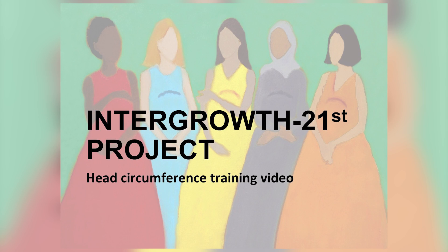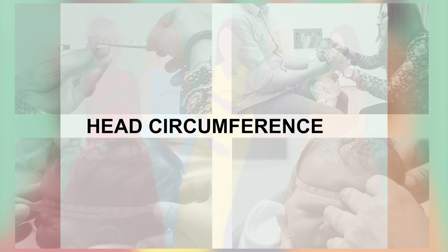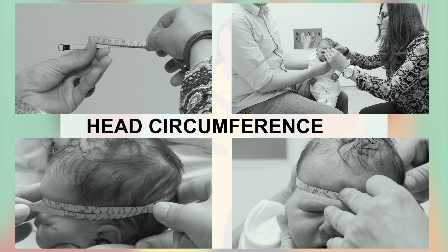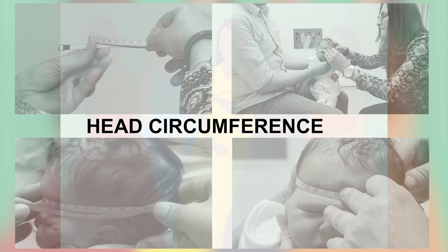Anthropometry involves a systematic measurement of the physical properties, size and shape of the human body. In this short film, you will be shown how to measure the head circumference of newborns and how to interpret that measurement using the Intergrowth 21st newborn size application tool.